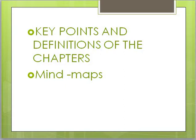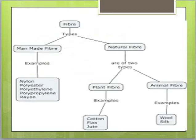Fiber is a thinner strand which is used to make fabric. Firstly, fibers make yarn and then yarn makes fabric. Yarns are then woven or knitted to form fabric.